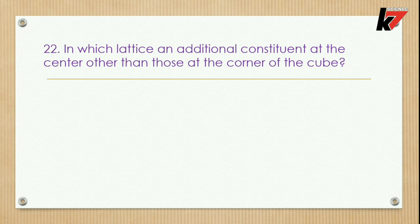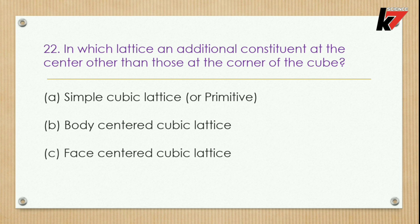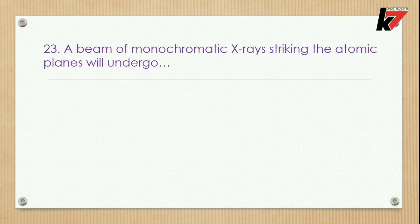Question 22: In which lattice is there an additional constituent at the center, other than those at the corners of the cube? Options: SCC (simple cubic), other crystals, body-centered cubic, or face-centered cubic. The correct option is body-centered cubic lattice.